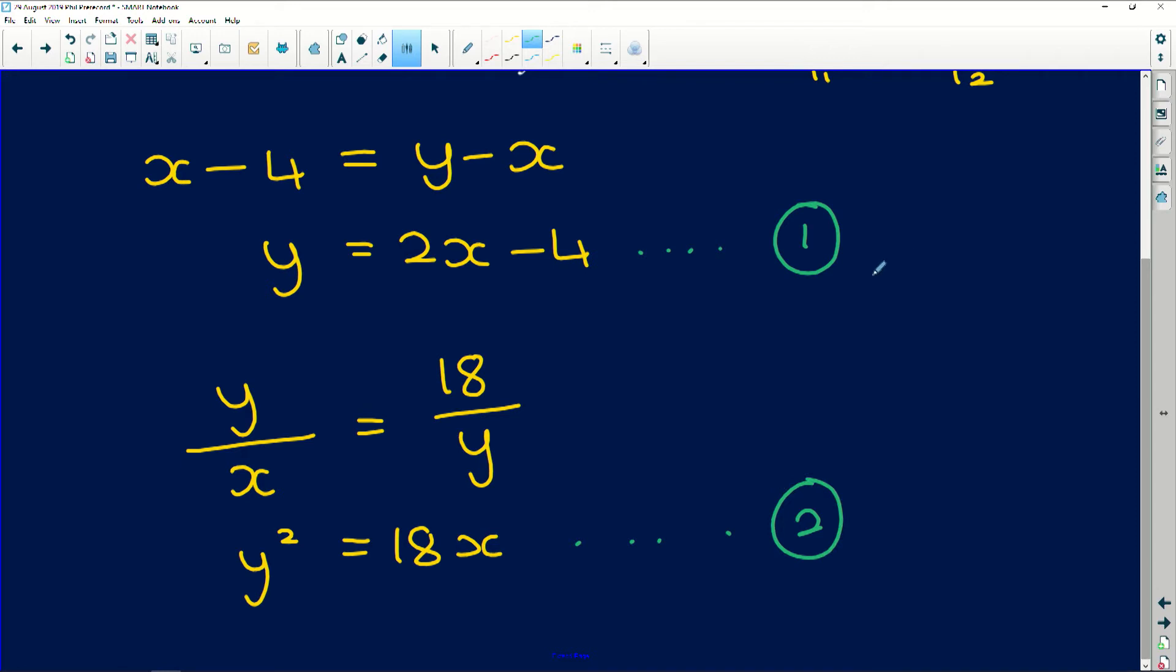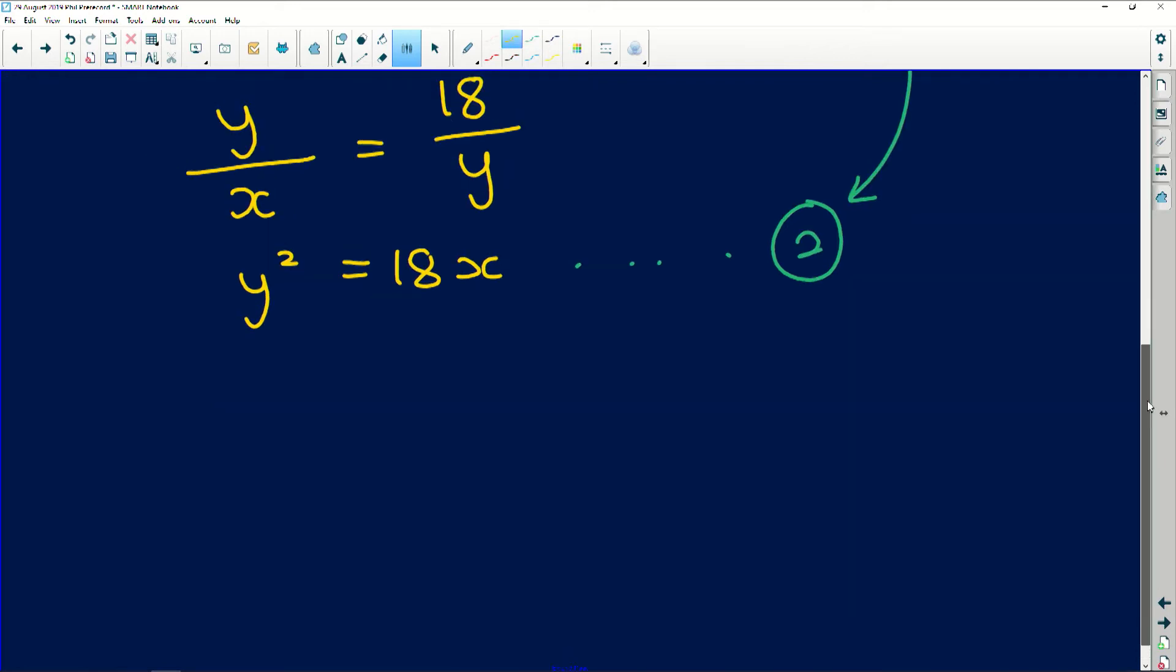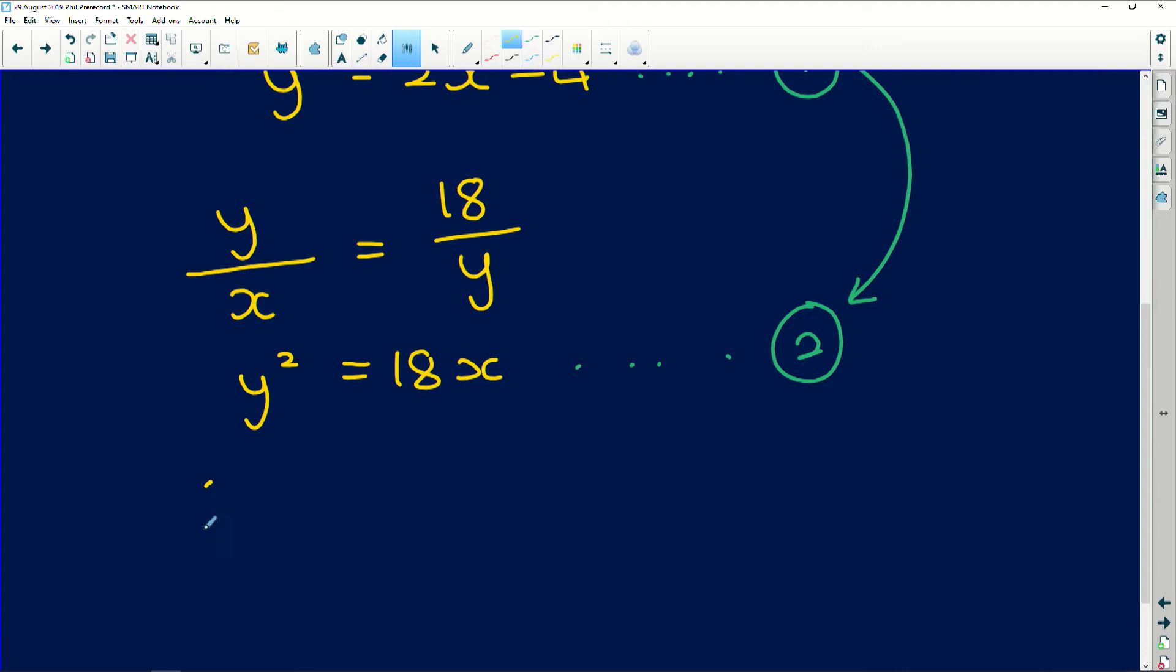So now what I'm going to do is I'm going to substitute 1 into 2. So that means every time I see a y in the second equation, I simply rewrite it as 2x minus 4. So here we have y squared. So 2x minus 4 squared is going to be equal to 18x.